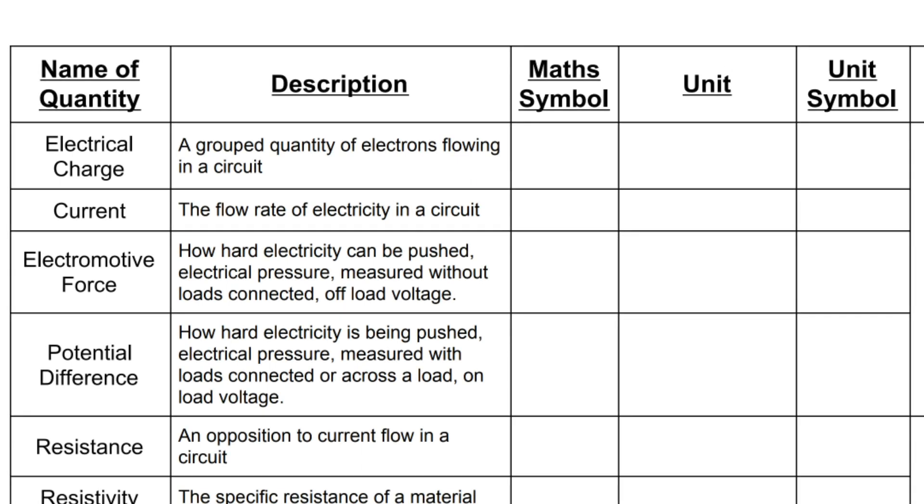So current is the flow rate of electricity in a circuit. The mathematical symbol that we use for that is a capital I. You may be wondering why I for current — it bears absolutely no relation to the word. It goes back to the fact that a lot of the people who investigated electricity in the early days were French, and it was called 'intensité du charge', which is where the I comes from. It's like how intense the charge was — in other words, the flow rate. So that's where the I comes from.